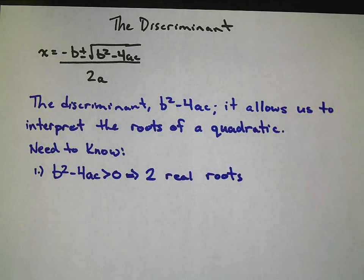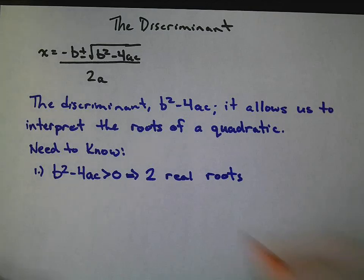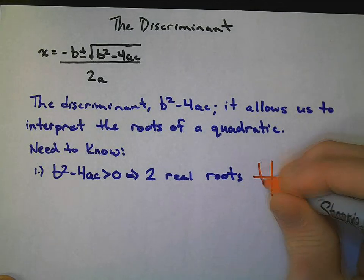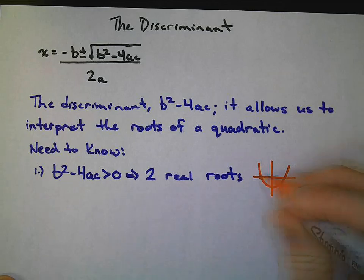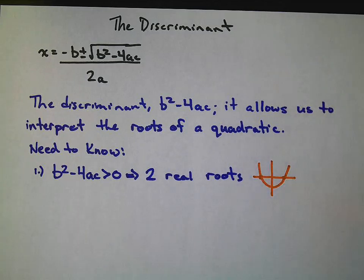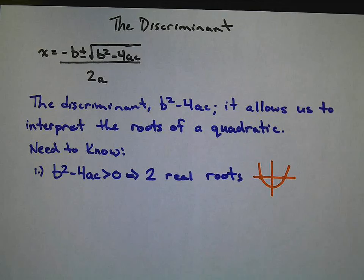And as what was asked in class, what does that really mean? Root is the same as an x-intercept. That means your parabola will cross your x-axis twice. In other words, have two x-intercepts.